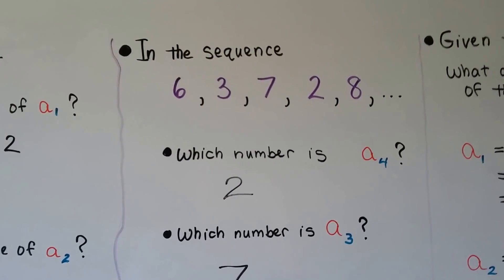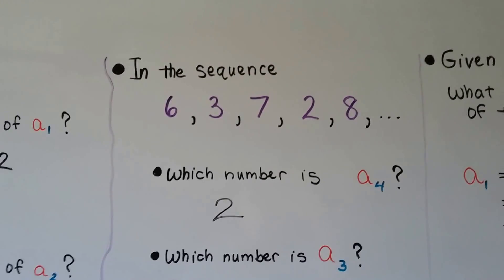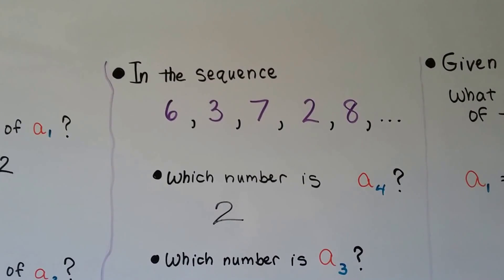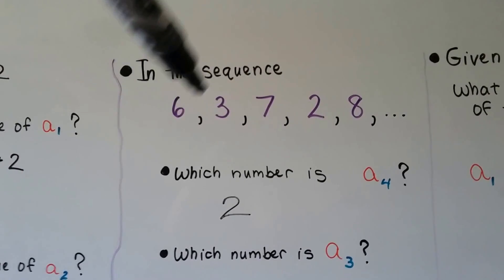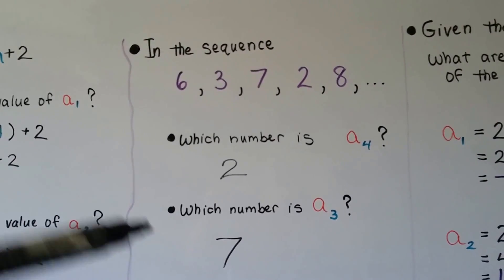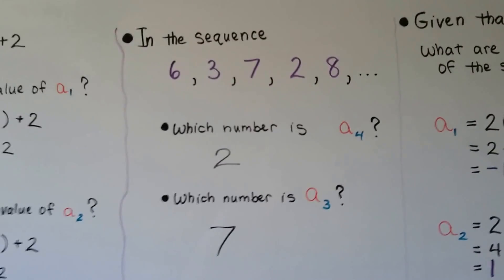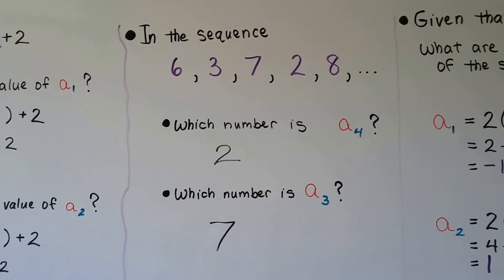Take a look at this sequence. We have 6, 3, 7, 2, 8. Which number is a sub 4? It's the fourth number in the sequence. It's 2. Which number is a sub 3? It's the third number in the sequence. It's a 7.